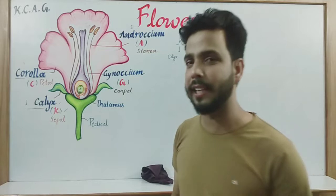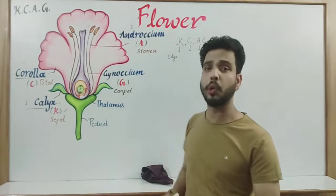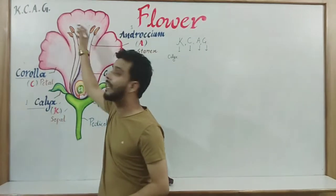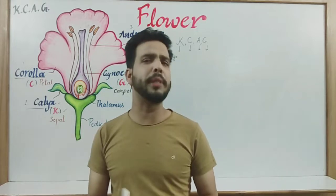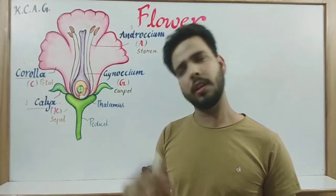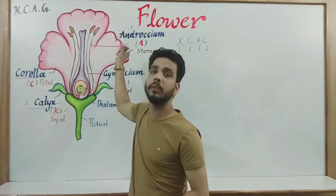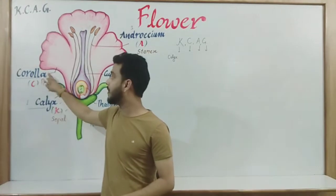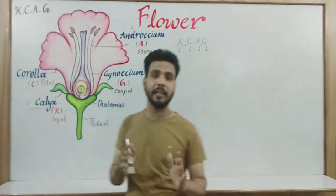After calyx, the second whorl is known as C, or corolla. In this diagram you can see pink colored corollas. In every flower, corolla may be of different colors — sometimes red, blue, pink, yellow, or orange. This pink colored structure of the flower is termed as corolla. It is represented with capital C, and the single unit is known as petal.